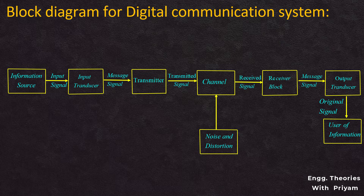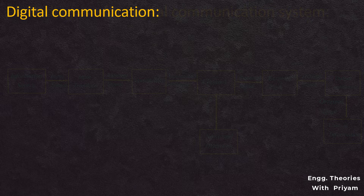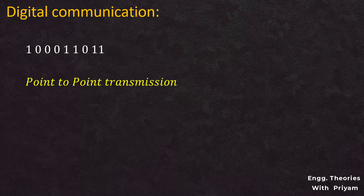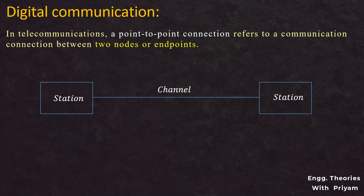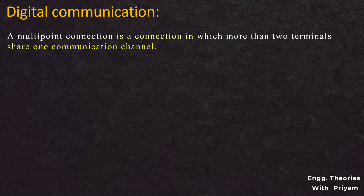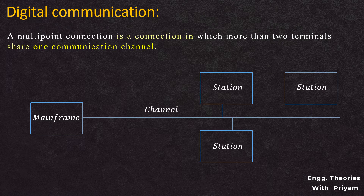In the digital communication system, a digital signal is used and the transfer of data occurs in the form of a digital bit stream over point-to-point or point-to-multipoint transmission medium. Point-to-point communication means the channel is shared between two devices or nodes. Multipoint communication means the channel is shared among multiple devices or nodes. The data is often represented as an electromagnetic signal, such as an electrical voltage signal or an infrared signal.